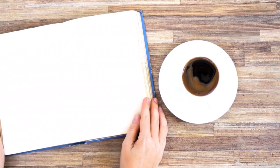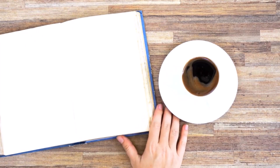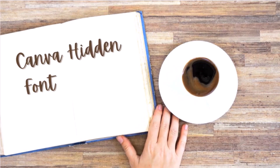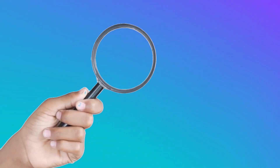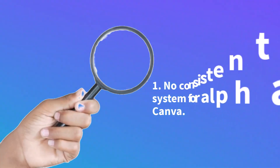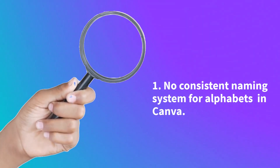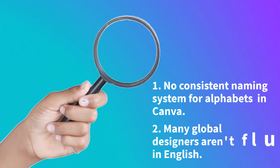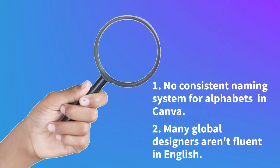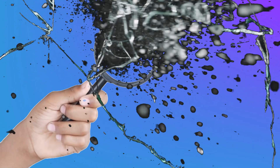I have spent a lot of time researching these alphabets. Some fonts are easy to find but others are a bit tricky and you have to dig down two or three layers to discover what you're looking for. This is mostly because there's not a consistent system for naming alphabets in Canva, and many of the designers from around the globe aren't fluid in English. So in this series I will cut through all of that confusion and show you how to find around 300 hidden fonts.